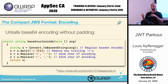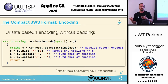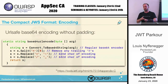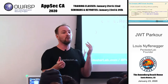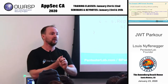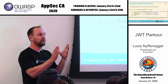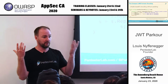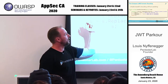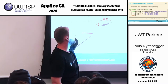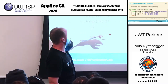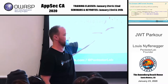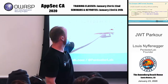It's base64 URL encoding without padding — a base64 version that works well with HTTP, since you're going to put your JWT in URLs, cookies, and headers. You need something without equal signs or slashes, because a slash would break URIs. So you take base64, remove the padding (equal signs), change plus to dash (since plus is a space in HTTP), and replace slash with underscore.